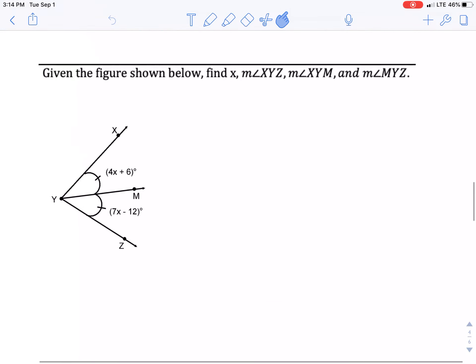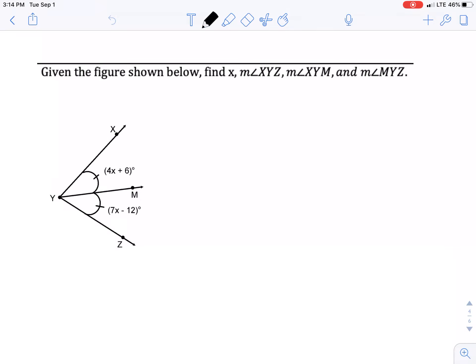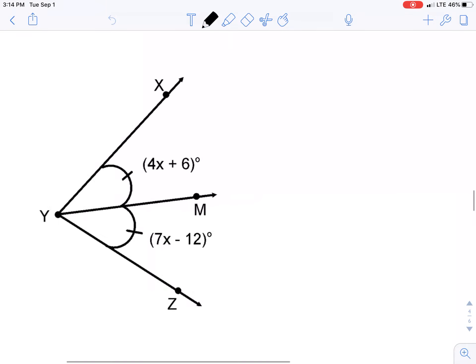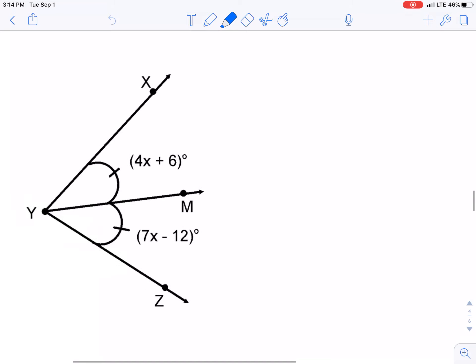All right, give the figure below, find out all this information. Well what did they give me? They give me those darn tick marks right here. What do those tick marks mean? Means congruent. Means congruent, they're the same thing. Means that the XYM is going to equal MYZ, or this is a part and this is a part.